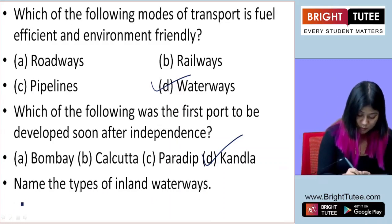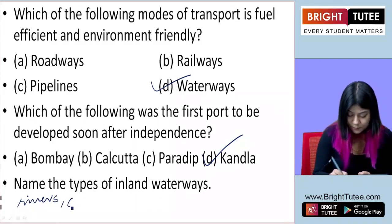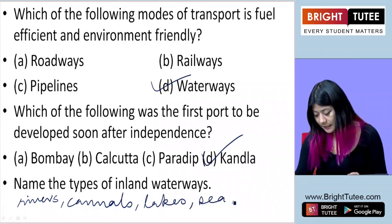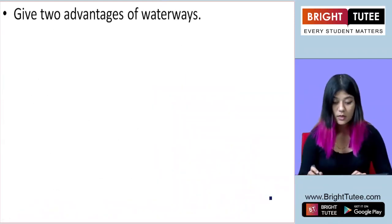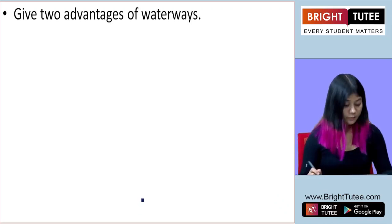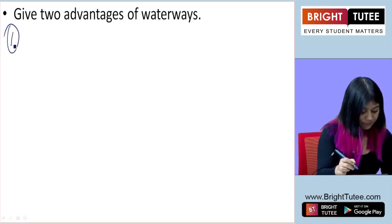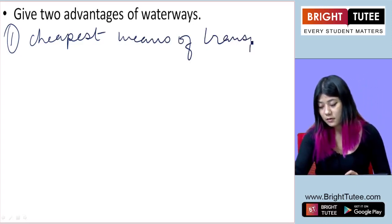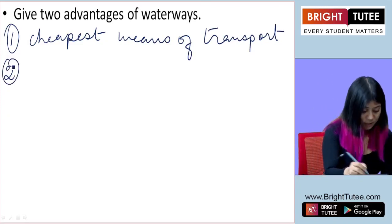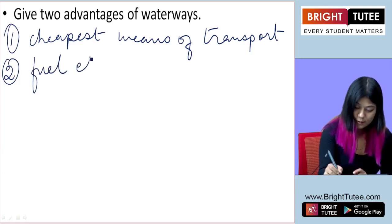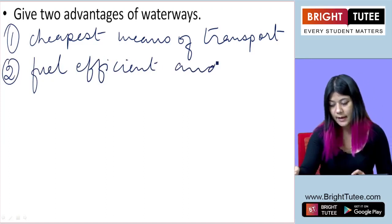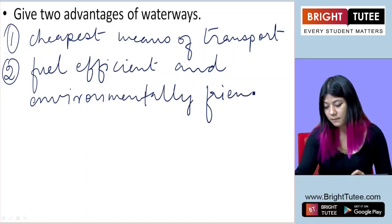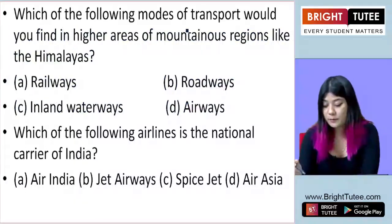The next question is: name the types of inland waterways. The types of inland waterways include rivers, canals, lakes, sea, etc. The next question: give two advantages of waterways. The first advantage is that waterways is the cheapest means of transport. The second advantage is that it is fuel efficient and environmentally friendly.